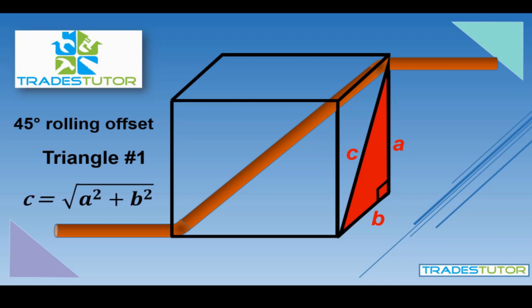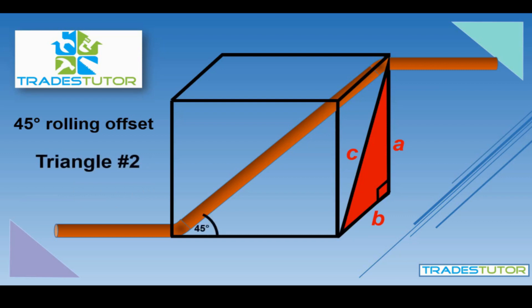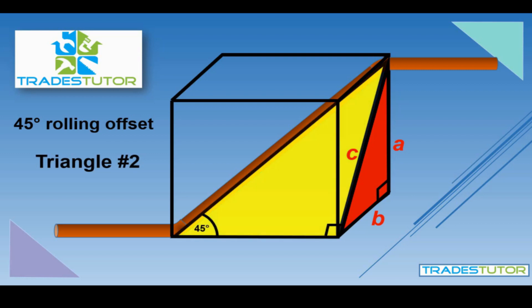Now we've found C from the first triangle, and we use it in the second triangle. The second triangle — remember it's a 45 — is comprised of the yellow part. Since one angle is 45, the other angle is also 45, which means the two sides are the same. So C on one side equals C on the other. What we're trying to find is the travel, which we call H. In a 45-degree right triangle, H is simply C times 1.414.